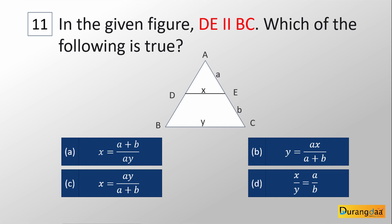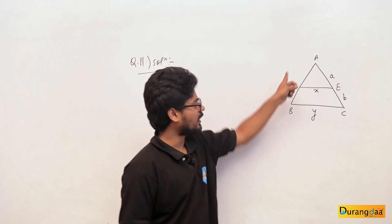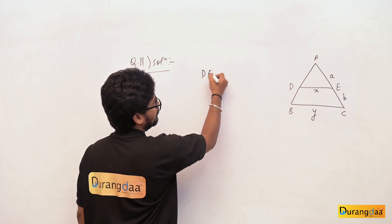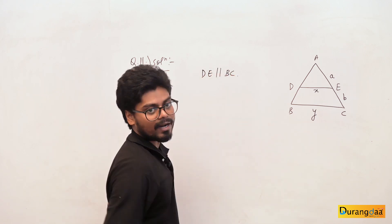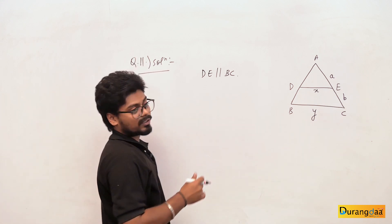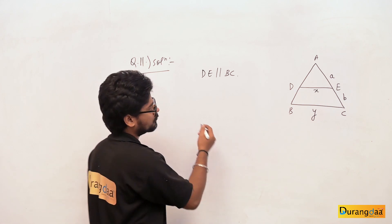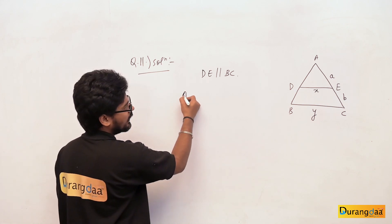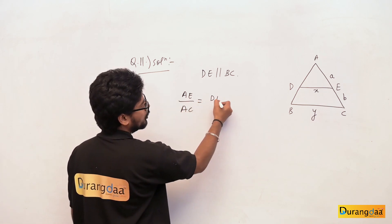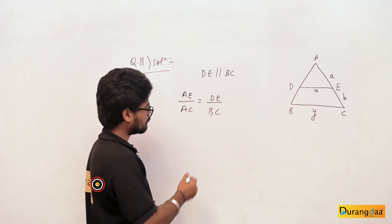Now let us discuss the solution of question number 11. We have triangle ABC where DE is parallel to BC. Directly we can write by the corollary of Thales' theorem: AE/AC = DE/BC.